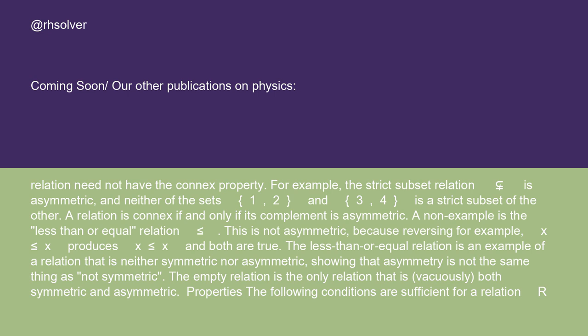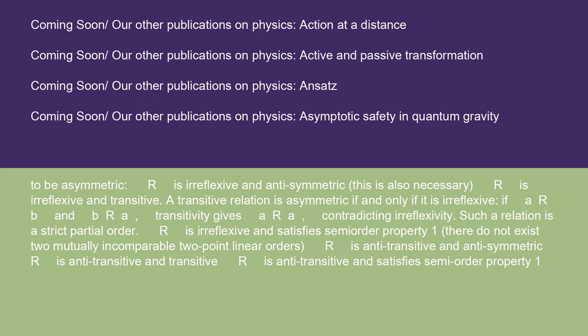Properties: the following conditions are sufficient for a relation R to be asymmetric. R is irreflexive and antisymmetric (this is also necessary). R is irreflexive and transitive. A transitive relation is asymmetric if and only if it is irreflexive.